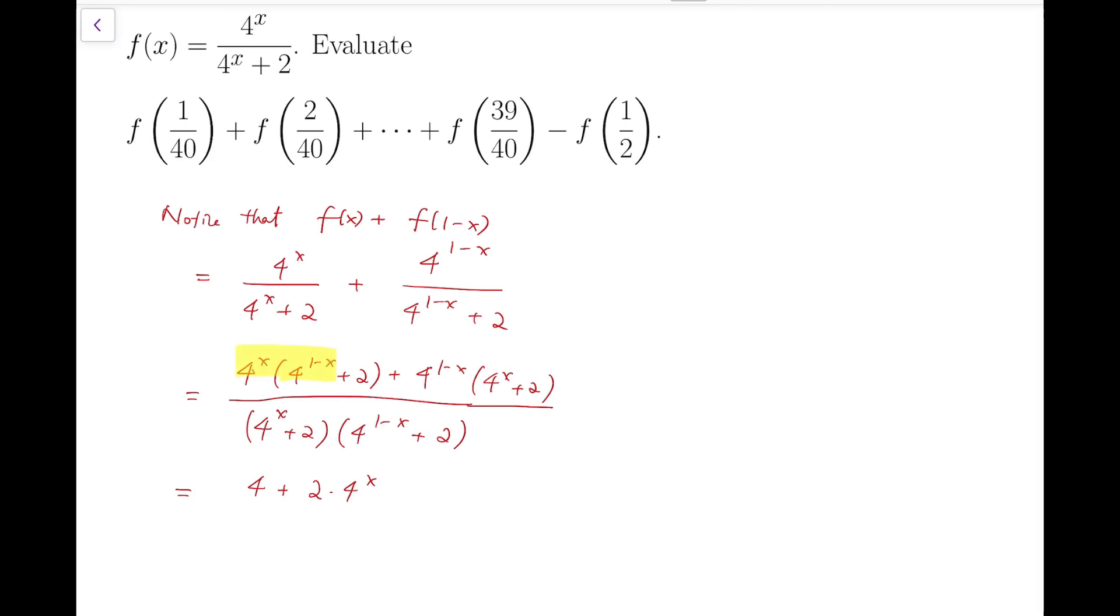Notice that if you multiply these two terms, then the index will be added up, and so you will get index 1. And then these two terms will be added by 4 again plus 2 times 4 to the 1-x.